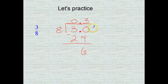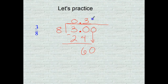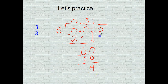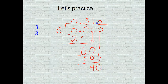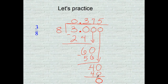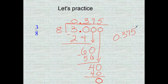8 cannot go into 6, so you add a zero and bring it down. 8 goes into 60, 7 times. 7 times 8 is 56. Subtract, you get 4. Add a zero, bring it down. You can keep following this process until you see repetition or termination. 8 goes into 40, 5 times. 5 times 8 is 40. Subtract — remainder 0. This is another terminating decimal. Final answer: 375 thousandths.